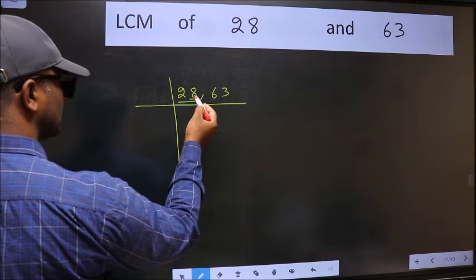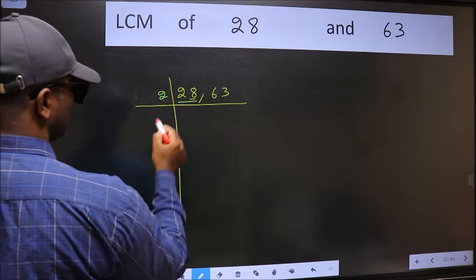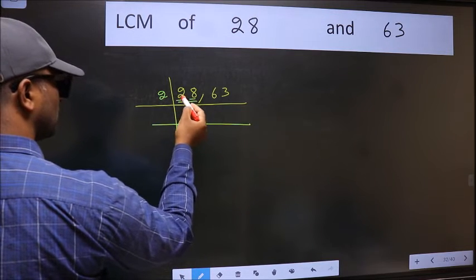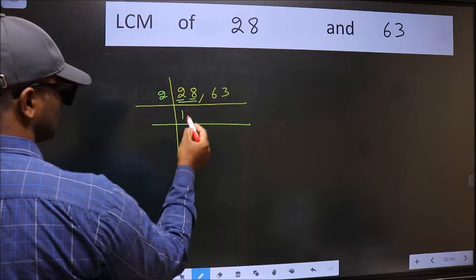In this number, last digit 8, even. So take 2. First number 2, when do we get 2 in the 2 table? 2 times 1 is 2.